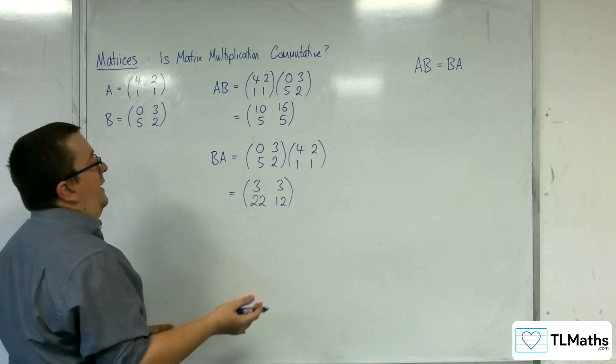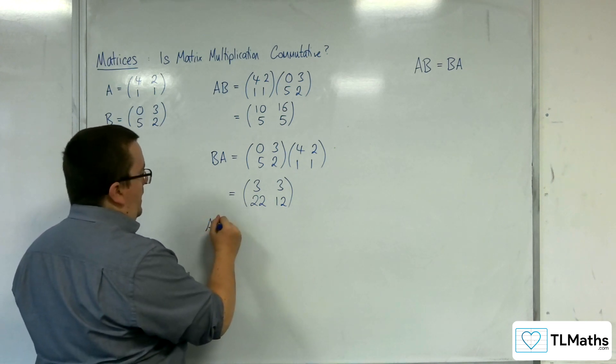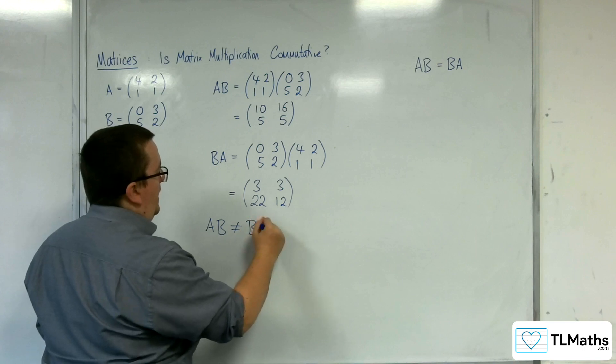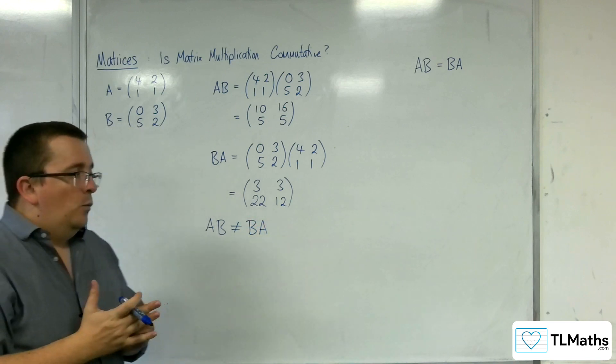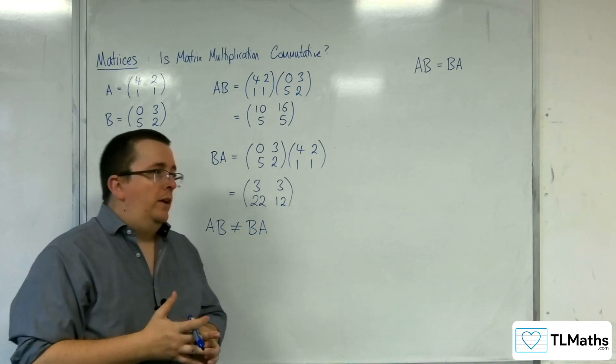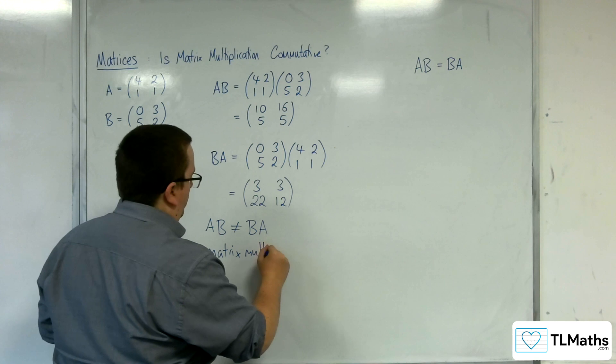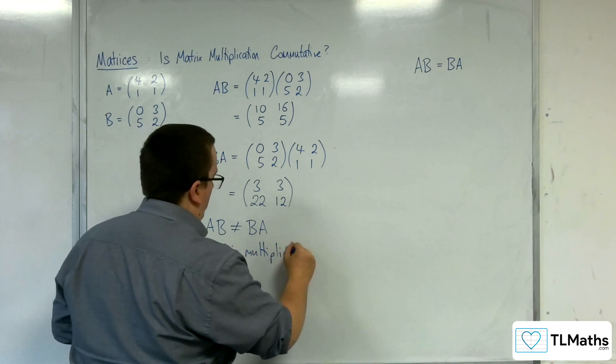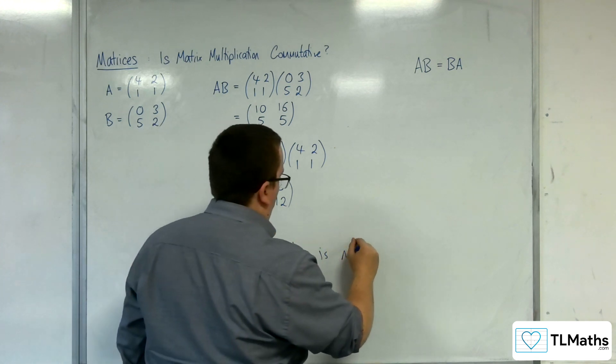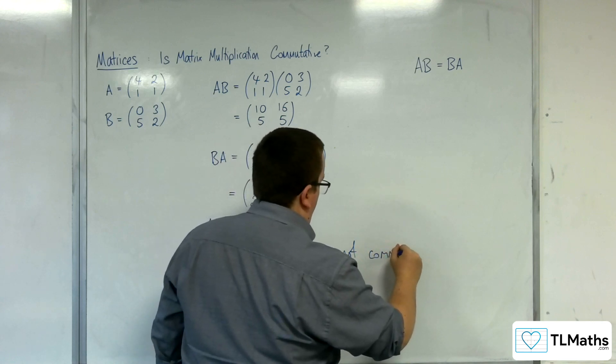So we can clearly see from this example that AB is not the same as BA. So in that, what that then means is that matrix multiplication is not commutative.